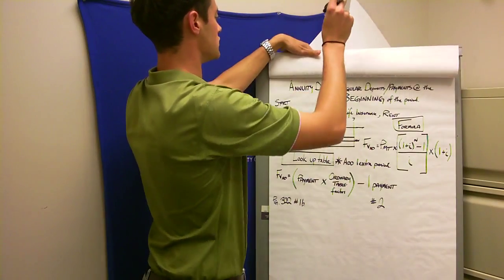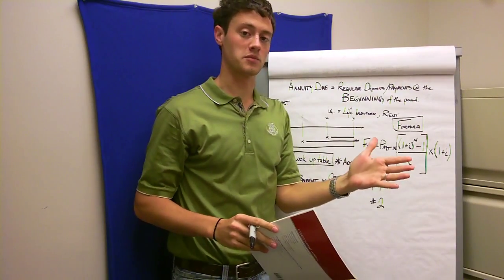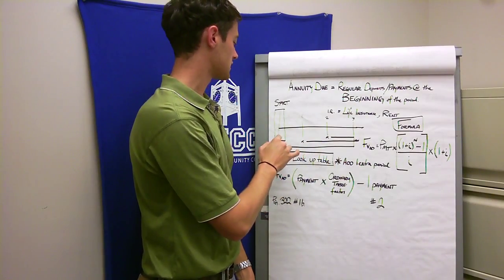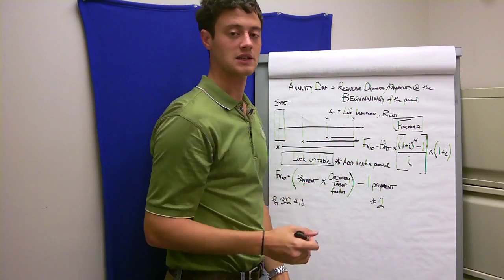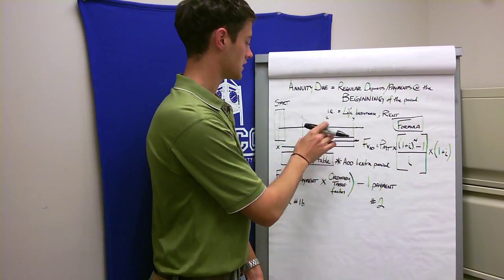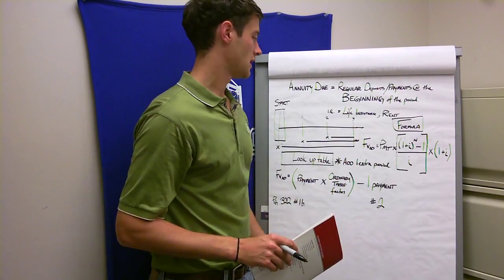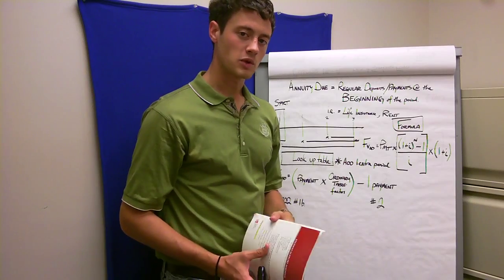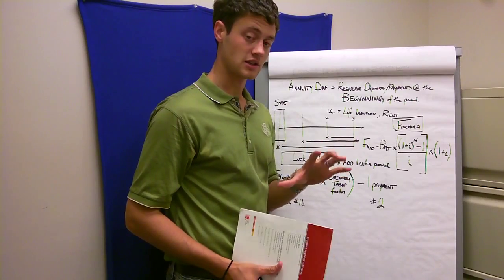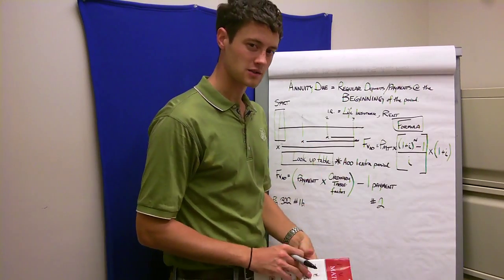Let's look at annuity due. Annuity due is a regular deposit or payment at the beginning of the month. We're actually starting at the beginning, and if you break this into segments, we get three more segments of interest compounded onto it compared to a three-period ordinary annuity — so it gets six periods of interest growing. The formula is also shown here. With the lookup table, you have to add one period to your initial periods and then subtract out one payment.